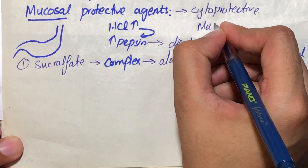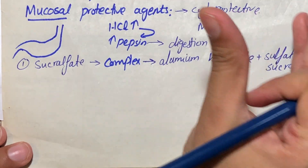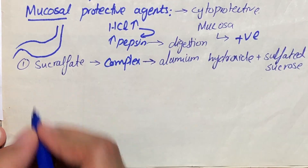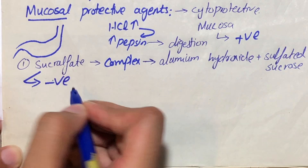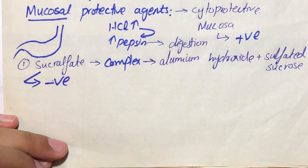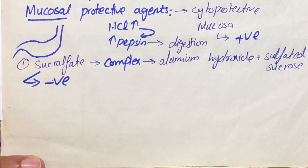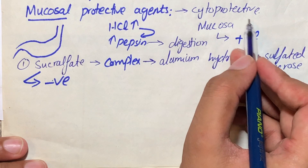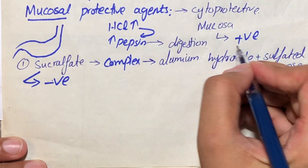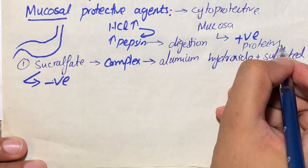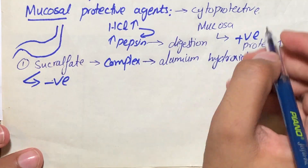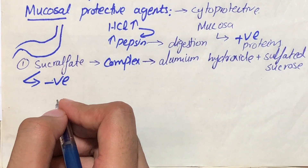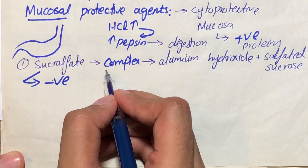One thing to remember is that the mucosa has proteins which are positively charged, whereas sucralfate is negatively charged. When there is a presence of opposite charges, they attract each other. In this way, the drug will bind to the mucosa because mucosa has positively charged proteins, while the drug has a negative charge. Not only the damaged or necrotic mucosa but also the normal mucosa has positively charged proteins.